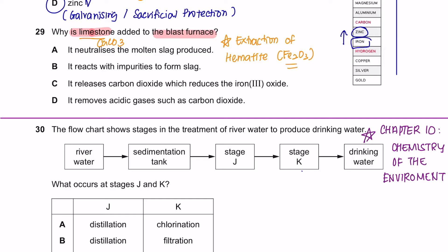So the calcium carbonate will first decompose to form calcium oxide. And then the calcium oxide that is formed will react with silicon dioxide, which is an impurity in the iron ore, to form slag. So it reacts with impurities to form slag. The answer is B.